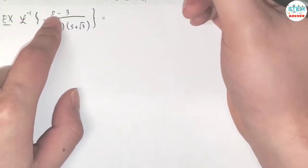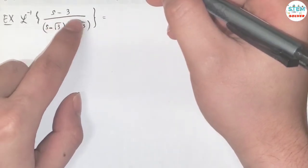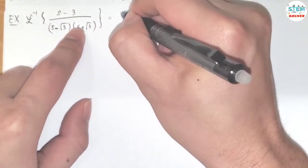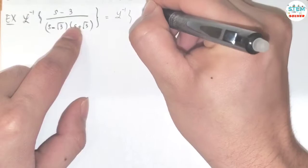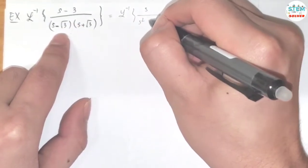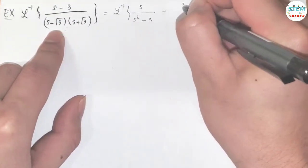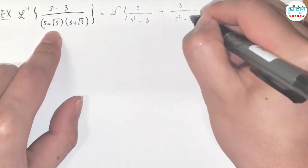On the top we have - and I'm going to split this into two fractions at the same time. So I have L inverse of s over s squared minus 3, minus 3 over s squared minus 3.